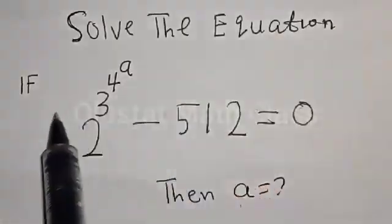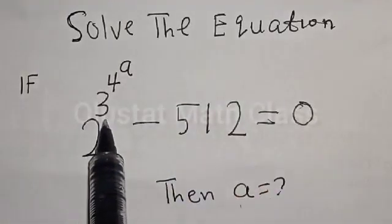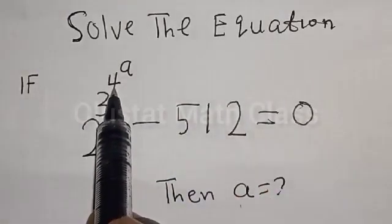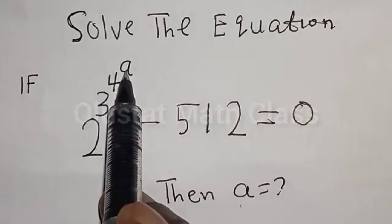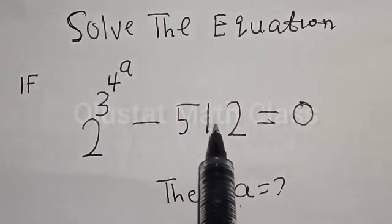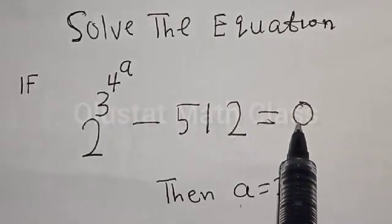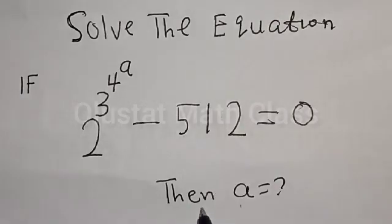Solve the equation: if 2 raised to power 3 raised to power 4 raised to power a, minus 512, is equal to 0, what is the value of a?